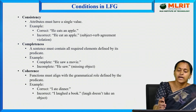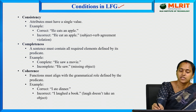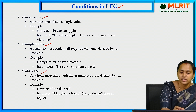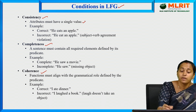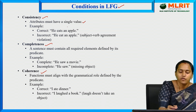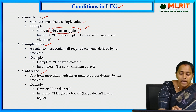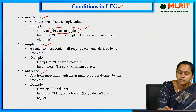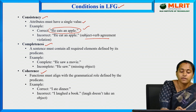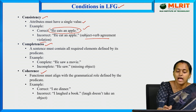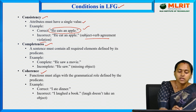What are the conditions in lexical functional grammar? There are three: consistency, completeness, and coherence. Consistency means attributes must have a single value. For example, 'He eats an apple' is correct, while 'He eat an apple' is incorrect due to subject-verb agreement violation. Completeness means a sentence must contain all required elements defined by its predicate. 'He saw a movie' is complete; 'He saw' is incomplete because the object is missing.